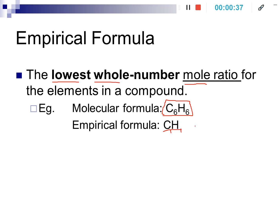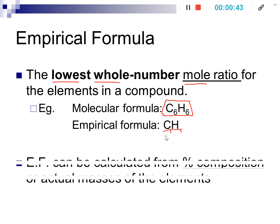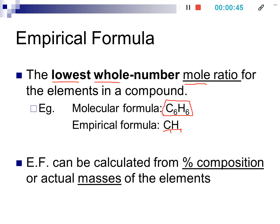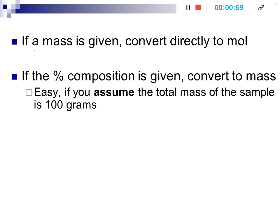That's not the actual formula of the molecule — that is its empirical formula, the lowest whole number ratio. We can calculate this empirical formula from the percent compositions for a particular molecule, or if we know the masses of the elements within the compound, then we can calculate from that as well. If mass is given, we can take that mass and convert it directly to moles, because we're looking for that mole ratio.